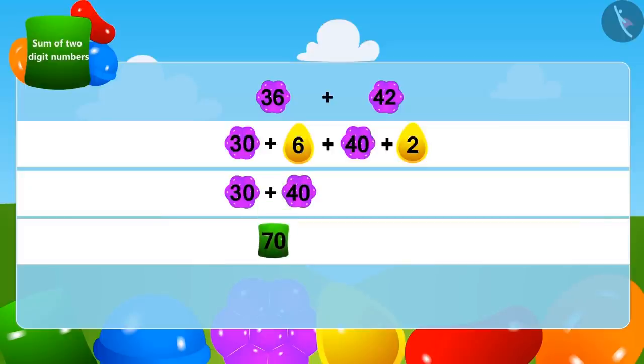We write the one-digit numbers together and add them: 6 plus 2 equals 8. Lastly, we add 70 plus 8 to get 78.